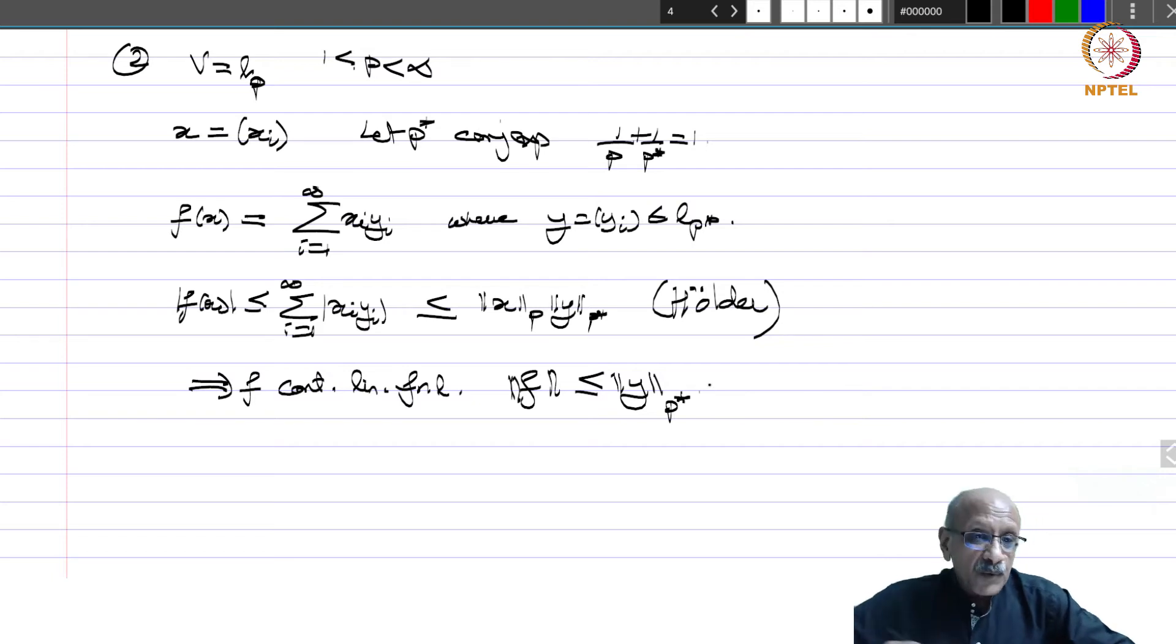One of the theorems which we will prove in this course is that every continuous linear functional on l_p will occur in this way. This is the only way, these are the only functionals. And in fact, you have equality here norm f equal to norm y_p star. And therefore, you can say that the dual space v star of l_p is nothing but l_p star. That is why we have given the conjugate exponent that notation p star because v star is in fact l_p star. This gives you an example of a continuous linear functional.